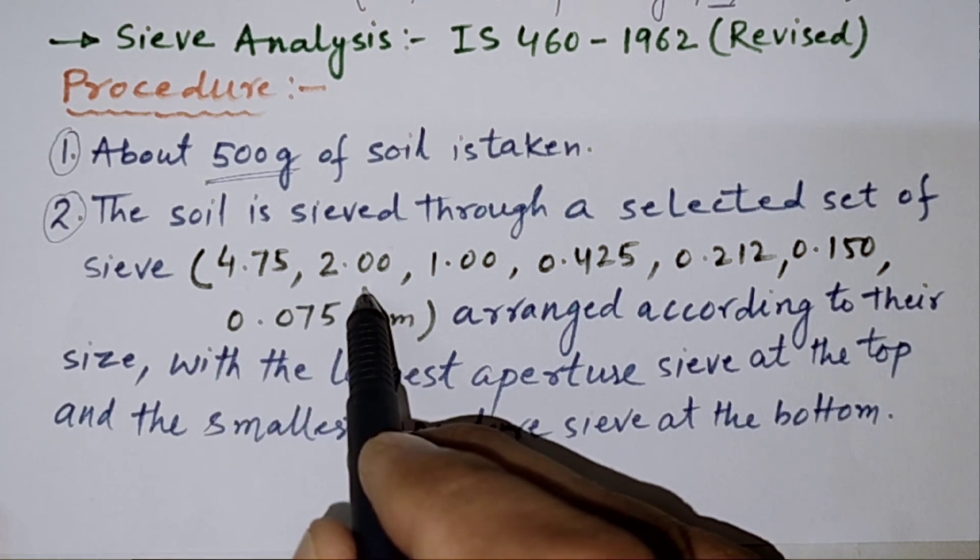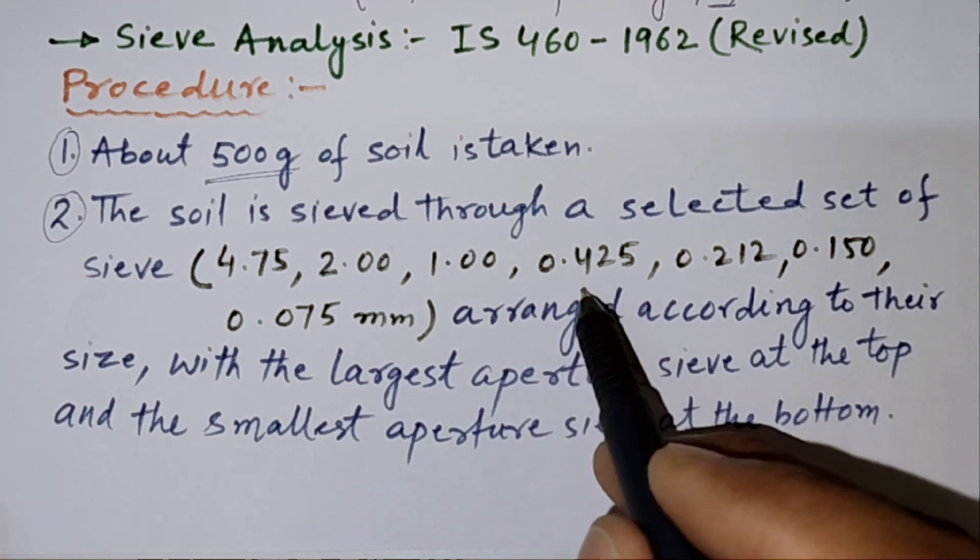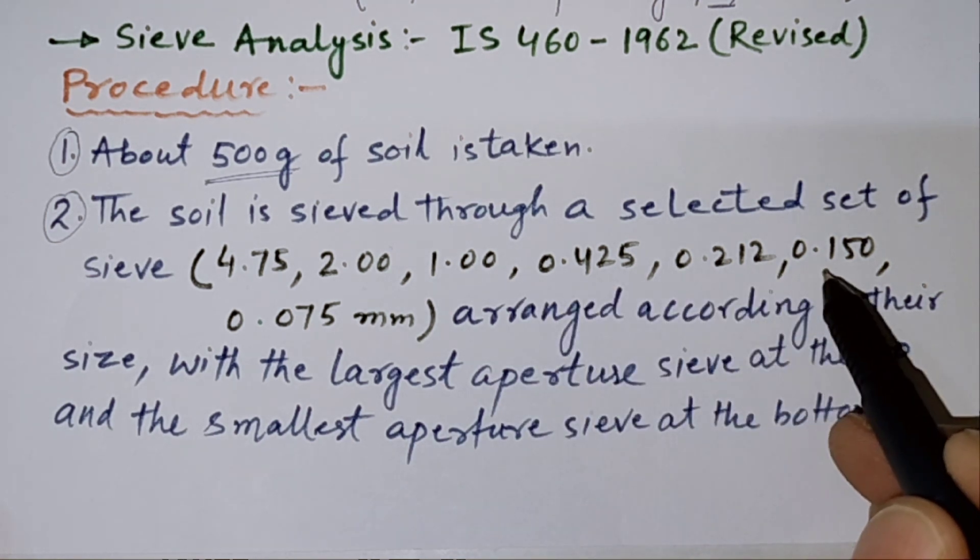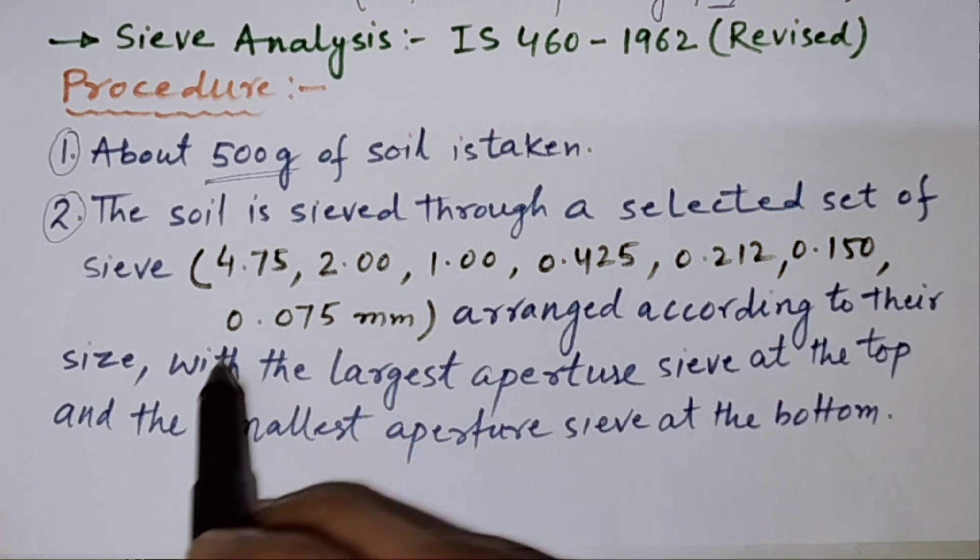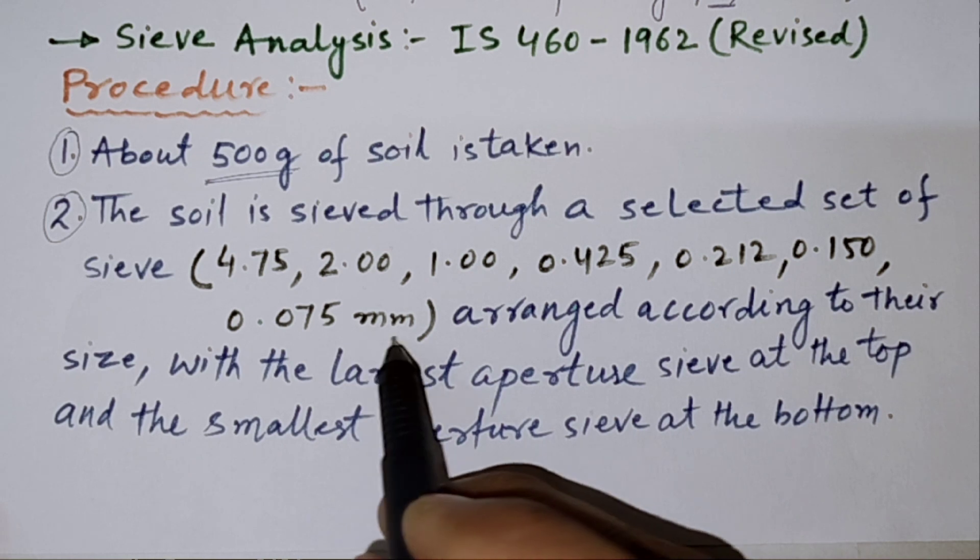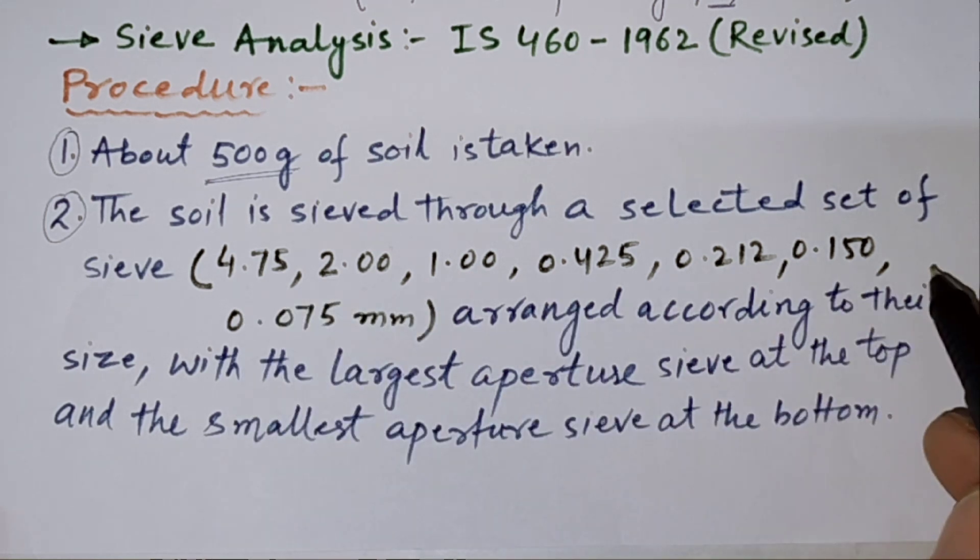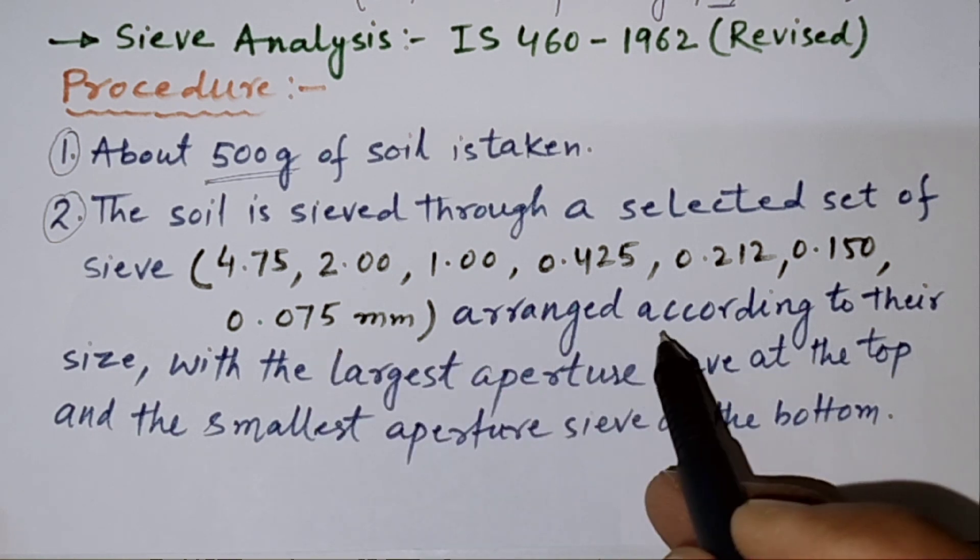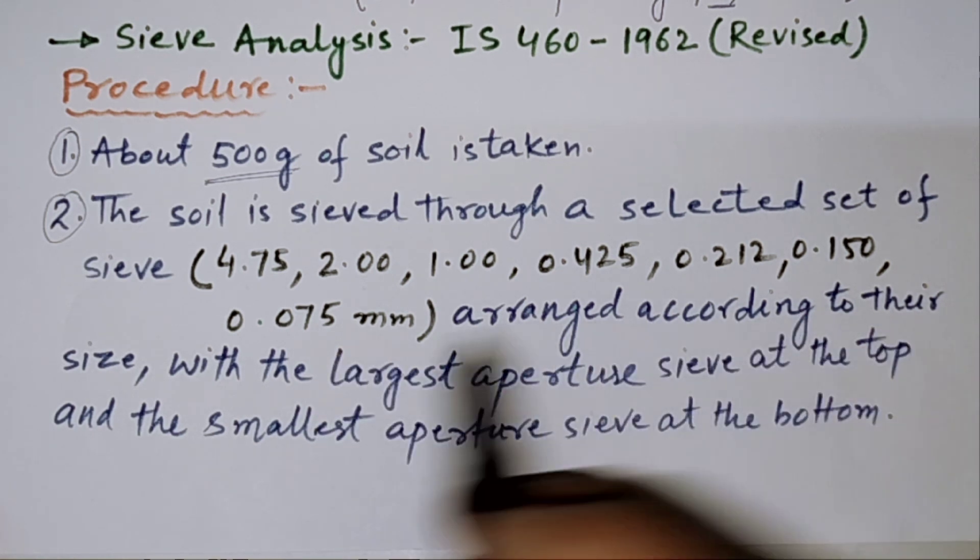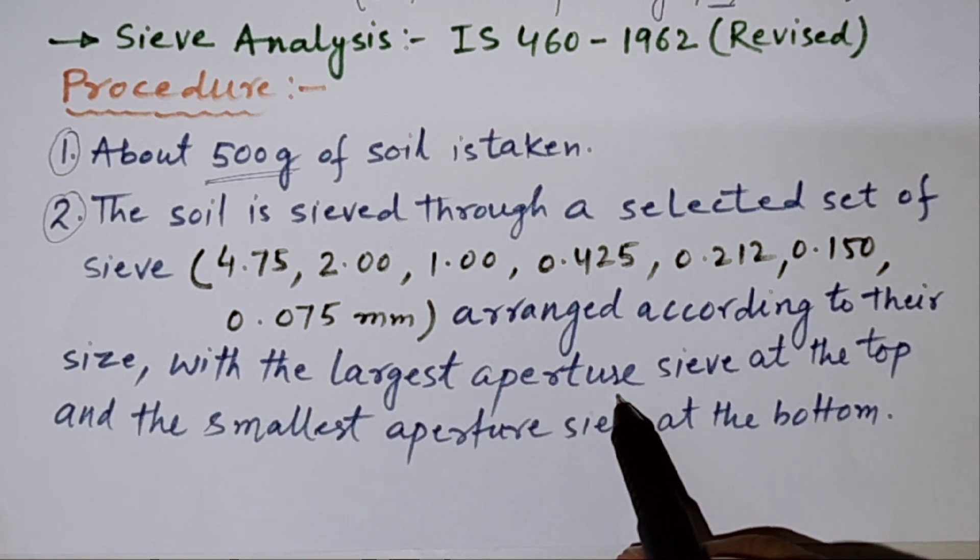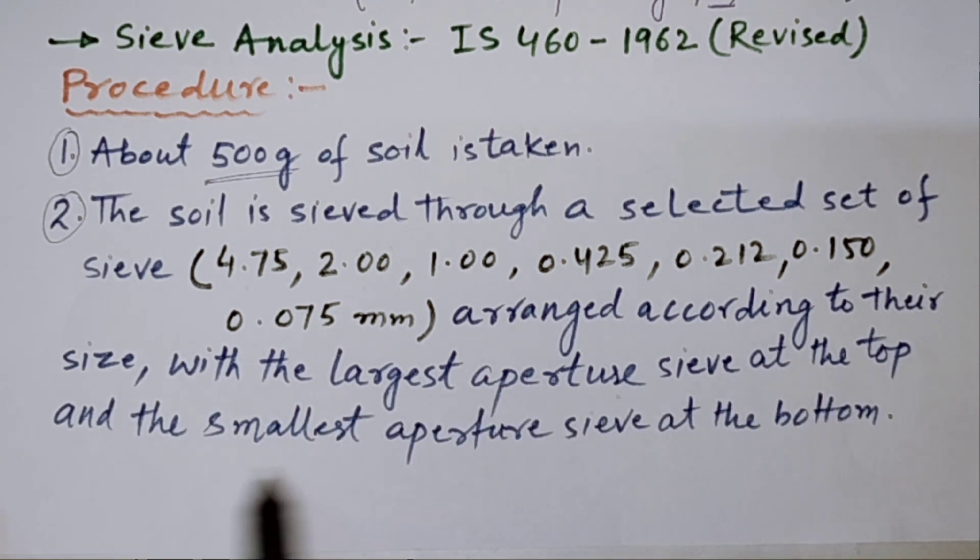The sieve sizes are 4.75, 2.00, 1.00, 0.425, 0.212, 0.150, and 0.075 mm. Usually, these sieves are used in case of sieve analysis and it is arranged accordingly to their sizes with the largest aperture sieve at the top and the smallest aperture sieve at the bottom.